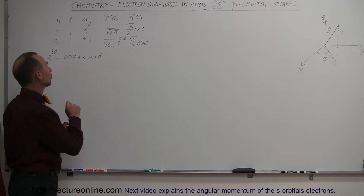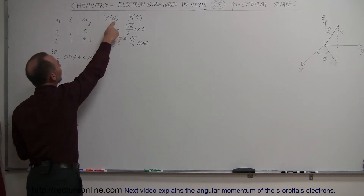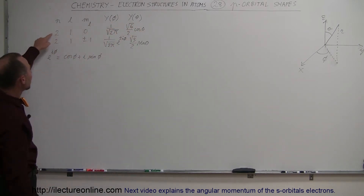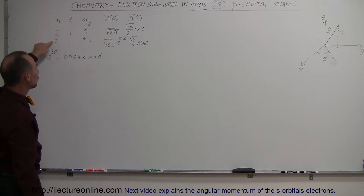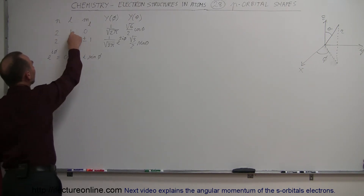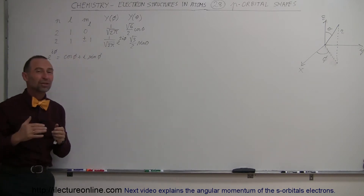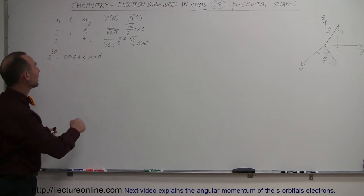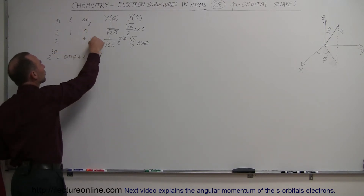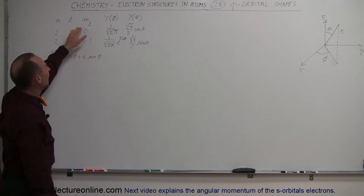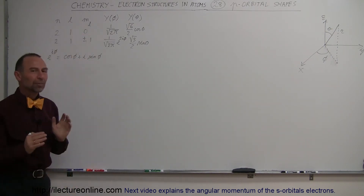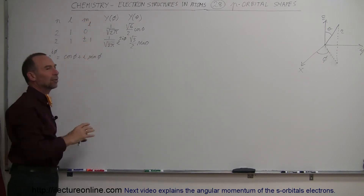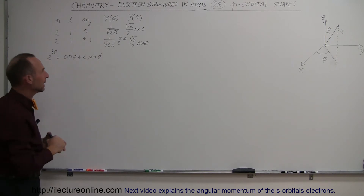In those spherical coordinates, we have a solution to the wave equation in the phi direction and in the theta direction for these specific p-orbitals. Notice that when the principal quantum number n is equal to 2 — that means the second energy level — and l is equal to 1, which is associated with the angular momentum of the electron and associated with the p-orbitals. There are 3 p-orbitals, numerically associated with m sub l, the magnetic quantum number, and we'll get into that in a later video.